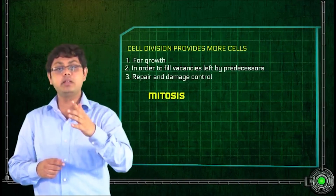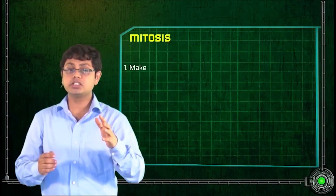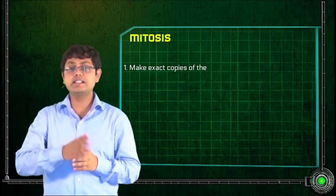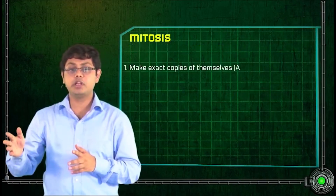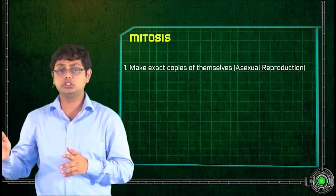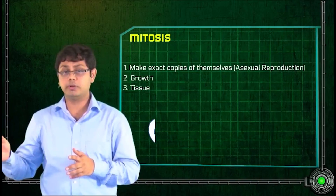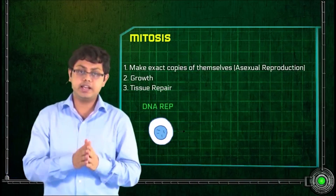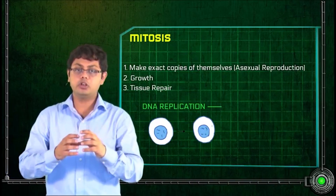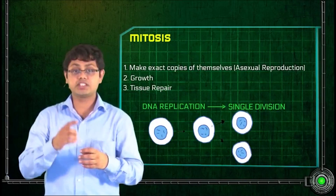Mitosis and meiosis. Cells do mitosis when they are going to make an exact copy of themselves for asexual reproduction, growth, or tissue repair. DNA replication occurs once, followed by a single division.